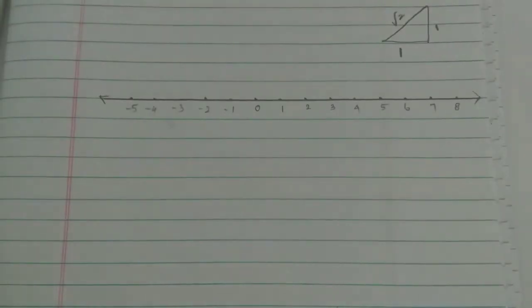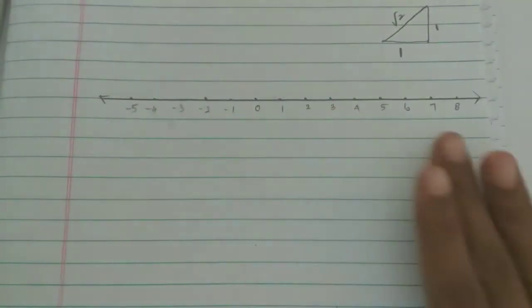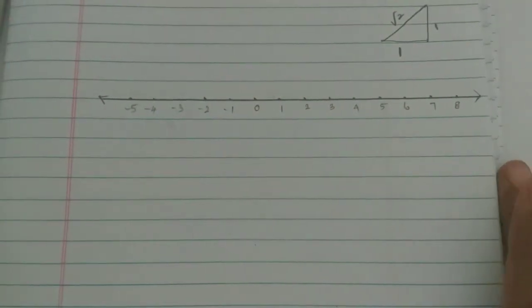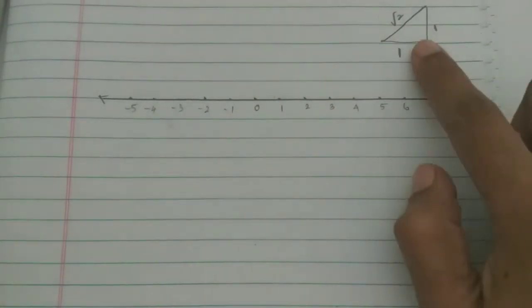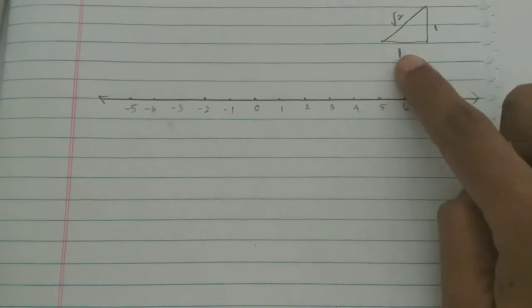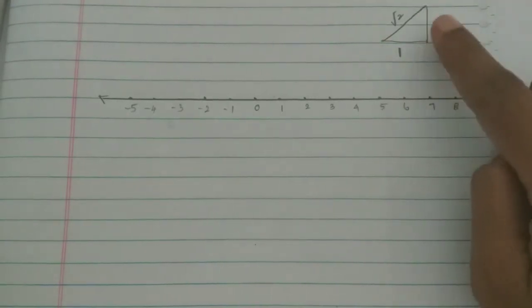Now let's take a small idea of how we mark root 2 on the number line. If you look at the isosceles triangle, the base is 1 and the height is 1.